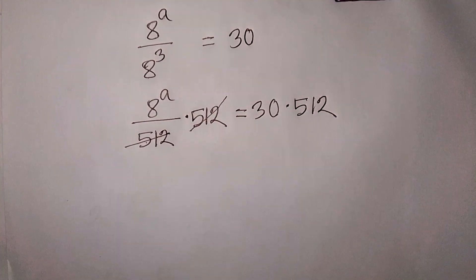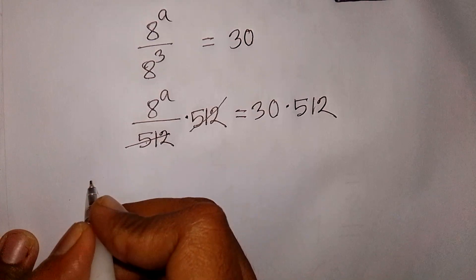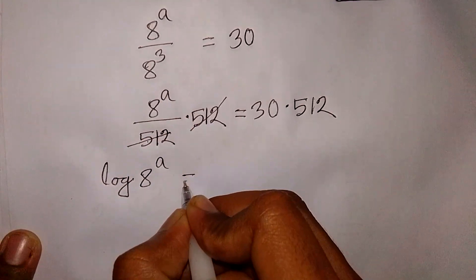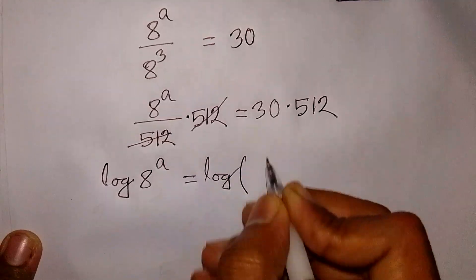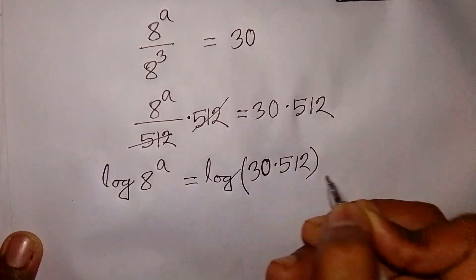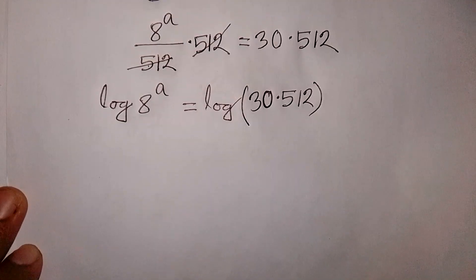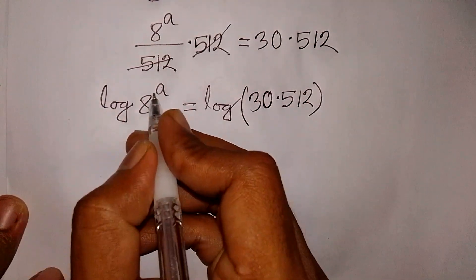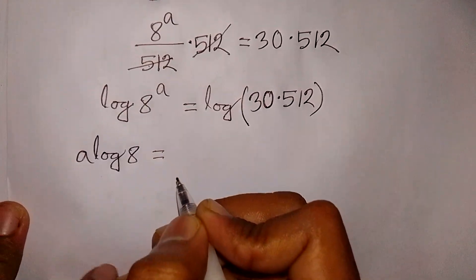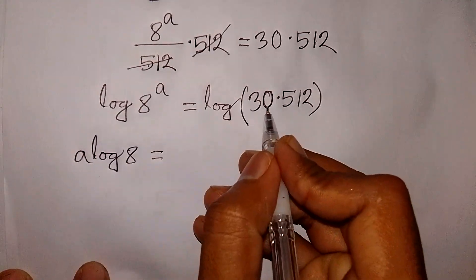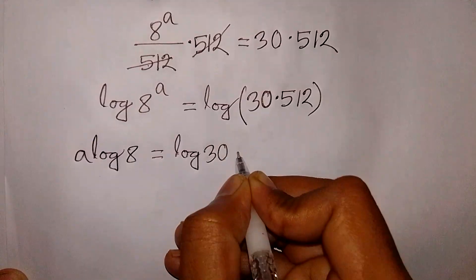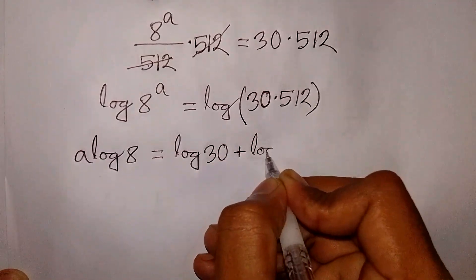Now we can apply log on both sides. We write log of 8^a is equal to log of 30 times 512. This power a will move to the front, so it becomes: a·log 8 = log(30 × 512), which is the same as log 30 plus log 512.